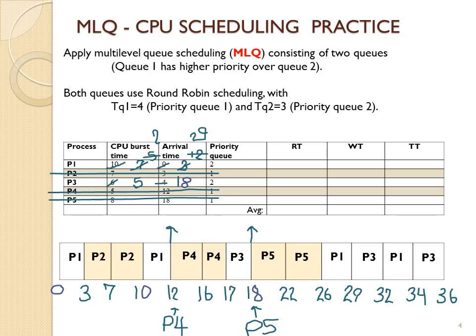Once we have the Gantt chart we can calculate the results. For response time: p1 arrived at time 0 and first got on the CPU at time 0. P2 arrived at time 3 and got right on the CPU. P3 arrived at time 4 but had to wait until time 17 to first get on the CPU. P4 arrived at time 12 and got the CPU right away. P5 arrived at time 18 and got the CPU right away. We calculate the average by adding them up and dividing by 5.